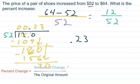I can turn this decimal into a percent. This is essentially a 23% increase in the shoe price. Shoes went from $52 to $64. So now we have a 23% increase.